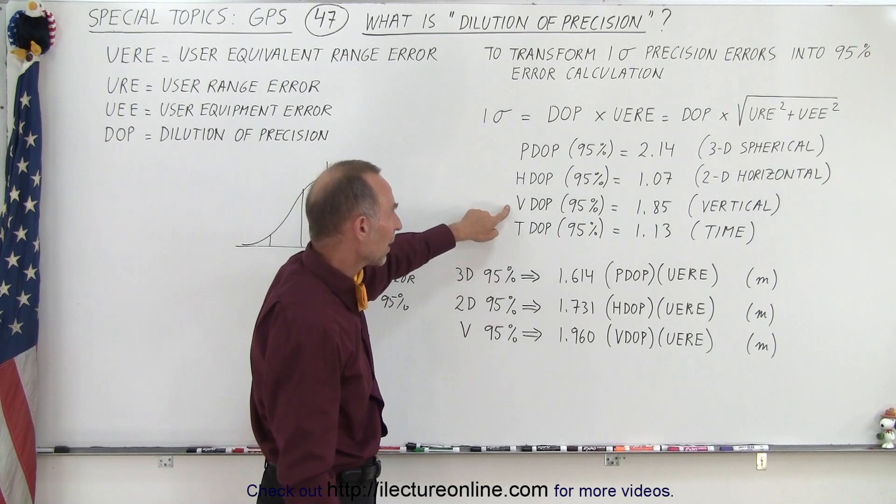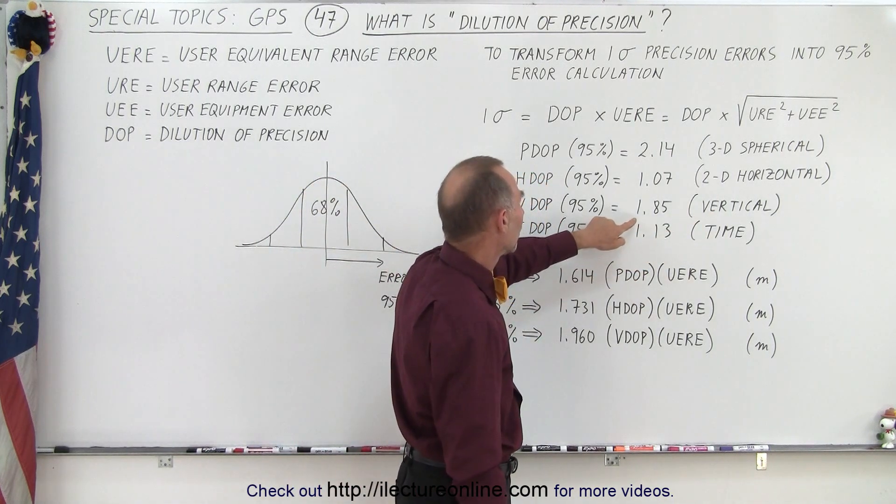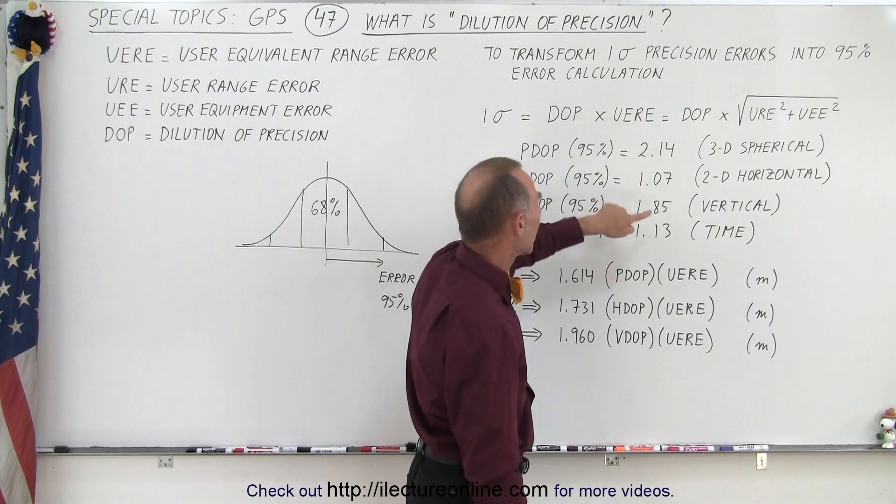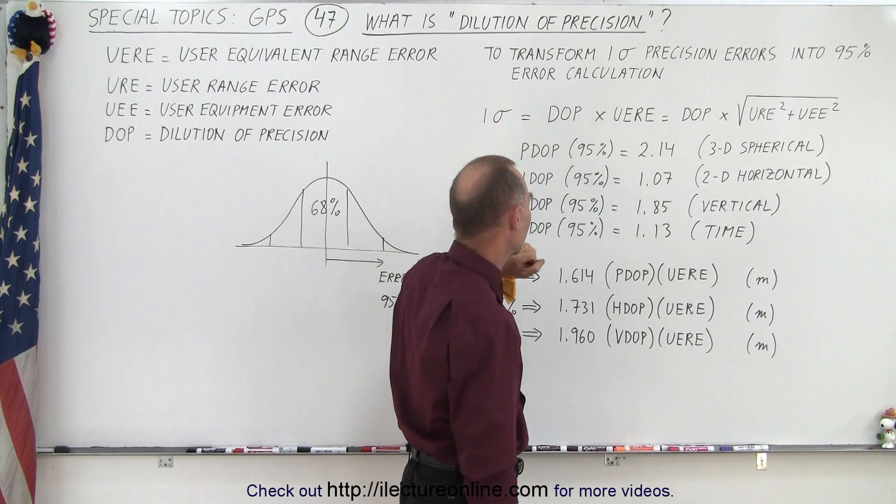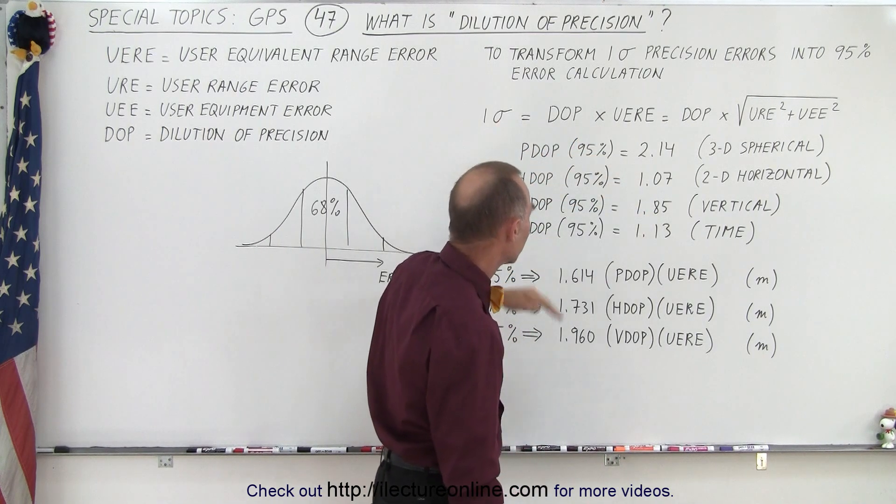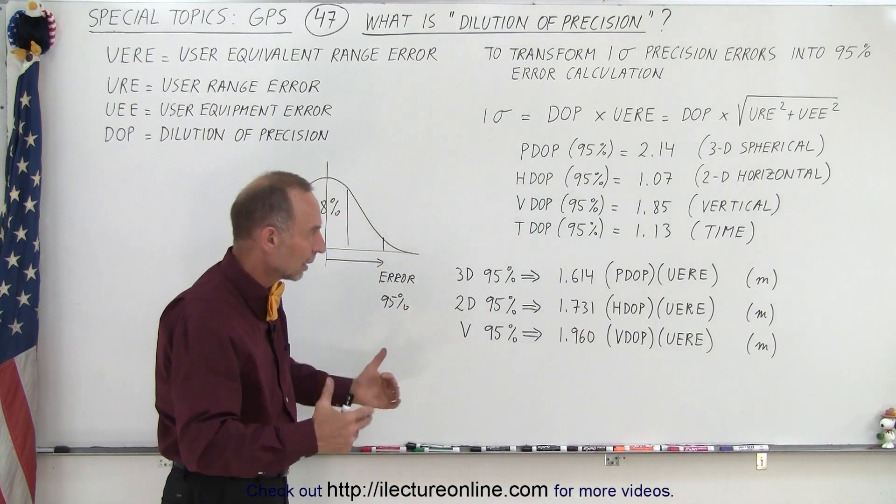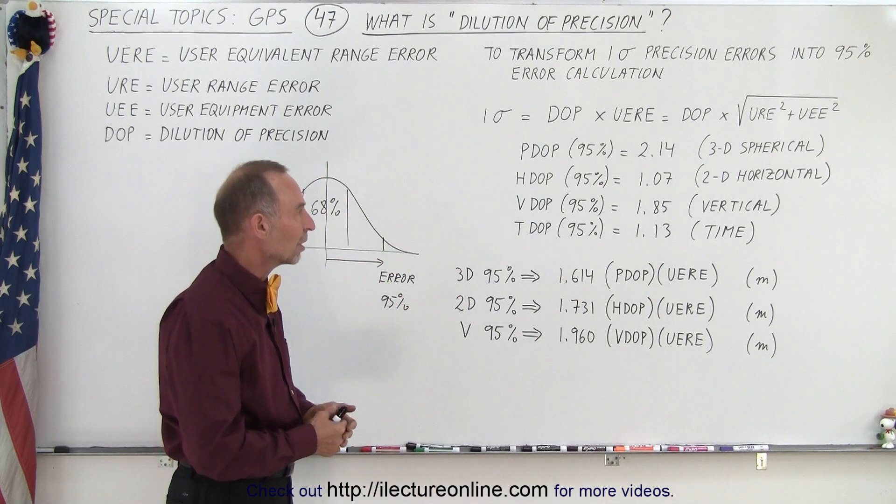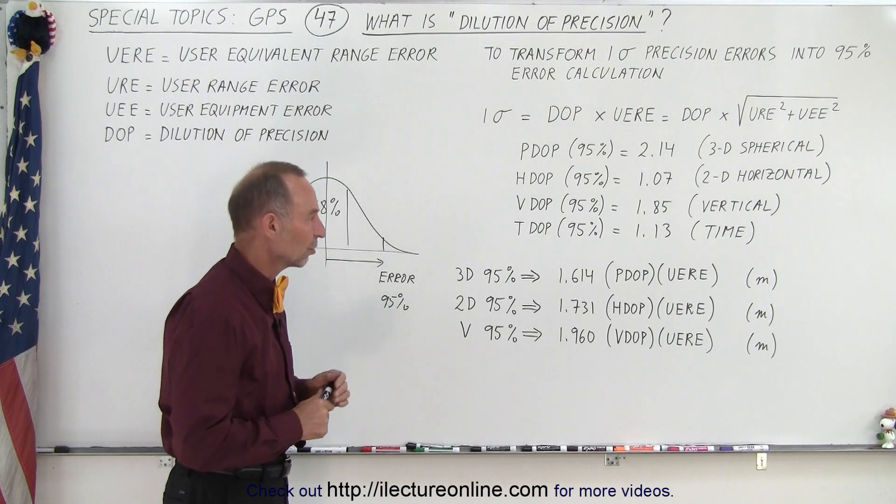And on the VDOP by itself, we have the vertical measurement by itself, we multiply the UERE by 1.85, to get the one sigma. And of course, we then deal with the time later, if we want a 95% certainty range of the time measurement as well.